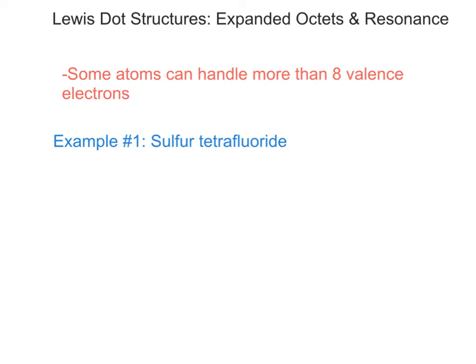While most atoms want to fulfill the octet rule — to have eight valence electrons and become isoelectronic with a noble gas — there are a few atoms that can actually handle more than eight valence electrons. When we have an atom that can take more than eight valence electrons, we call those expanded octets. Most of those atoms are located in the third period or higher.